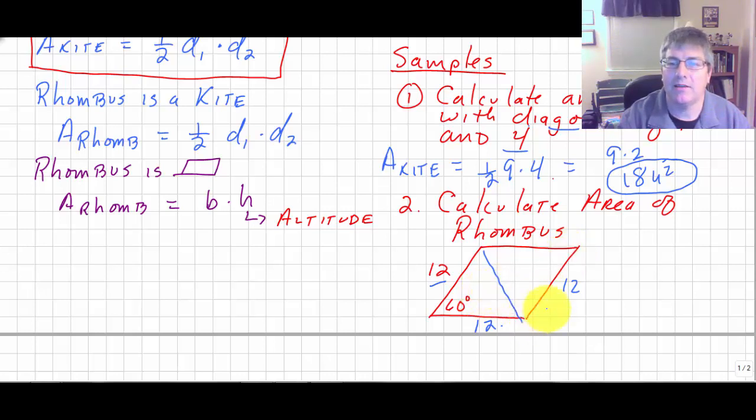Actually we do, but that's not going to be the easiest way to do that. We can use our properties of a 30-60-90 and find the area of the rhombus easy enough. So I draw an altitude. My hypotenuse is 12. That's 2x. So I know x is 6. So my height is 6 square root of 3.